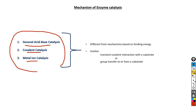These mechanisms are different from those that use binding energy. The mechanism using binding energy is based on several non-covalent interactions, whereas general acid-base catalysis, covalent catalysis, and metal ion catalysis involve transient covalent interaction with a substrate or group transfer to or from a substrate.